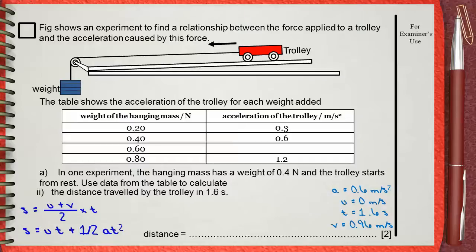But let us use the simpler. u is 0 plus v which is 0.96. You calculated it from the previous question. Divided by 2. This fraction is multiplied by time which is 1.6. And this gives a final answer of the distance equals 0.768 meters.